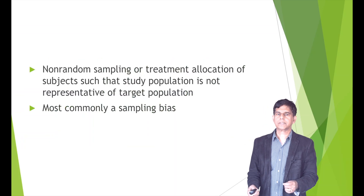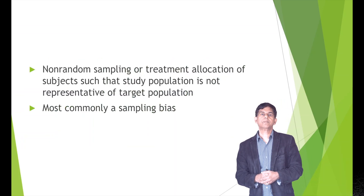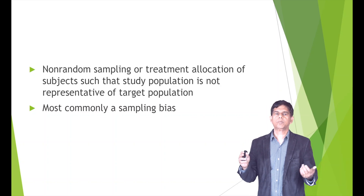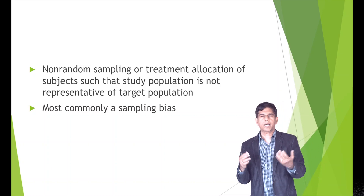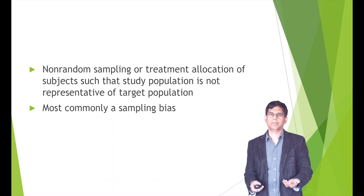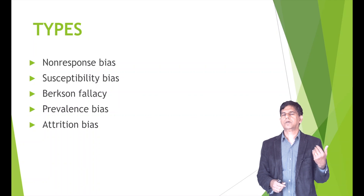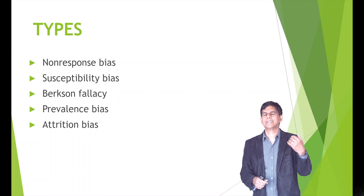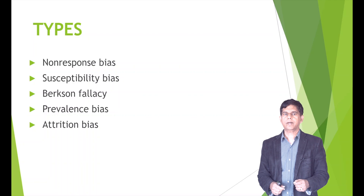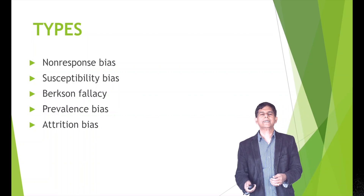So what is selection bias? It's a non-random sampling or treatment allocation of subjects such that the study population is not representative of a target population. Most commonly it is a sampling bias. The different types include: non-response bias, susceptibility bias, Berkson fallacy, prevalence bias, and attrition bias.